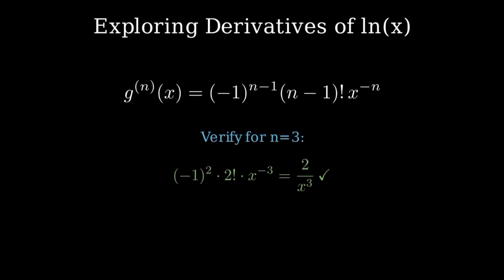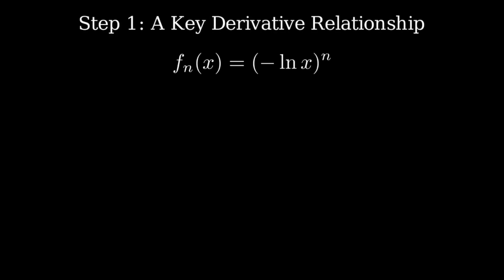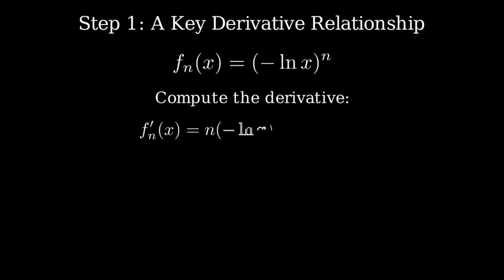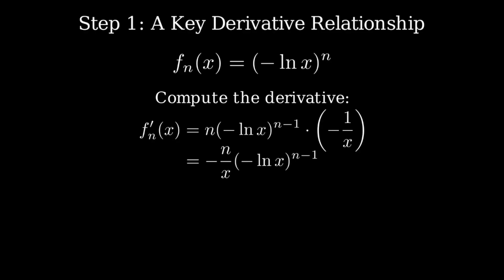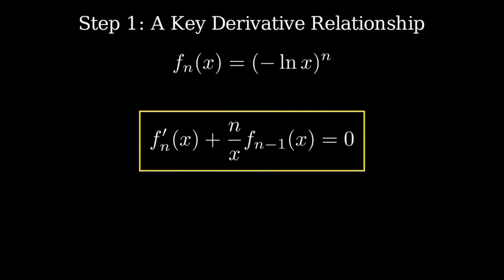Now let's take what we learned and build something more general. Let me define a new function: f_n(x) = (-ln x)^n. Let's compute its derivative using the chain rule. The derivative of f_n is n times (-ln x)^(n-1) multiplied by -1/x, which simplifies to -(n/x) · f_{n-1}(x). So we have the relationship: f_n'(x) + (n/x) · f_{n-1}(x) = 0. This relationship is going to be absolutely key.